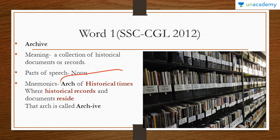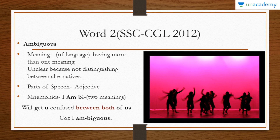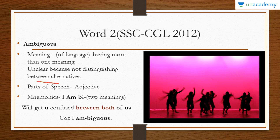Our next word is 'ambiguous.' It literally means having more than one meaning. The part of speech is adjective. The first meaning relates to language — something which is ambiguous will have more than one meaning. Also, something unclear because it doesn't distinguish between alternatives — it's neither black nor white, it's gray. That gray thing is called ambiguous; it does not have a clearly defined boundary or alternative.